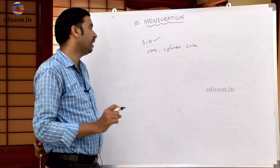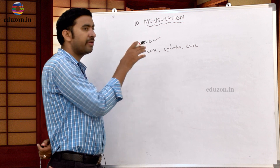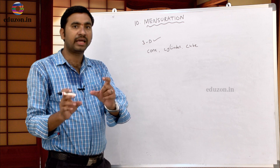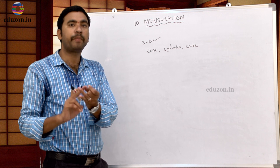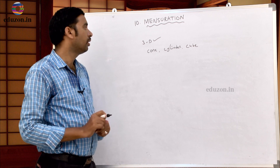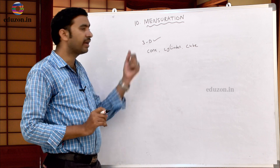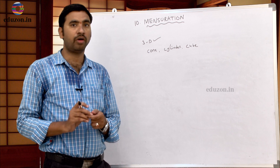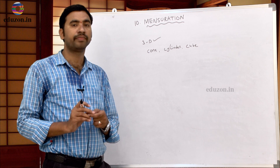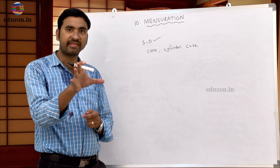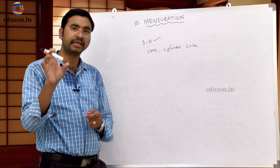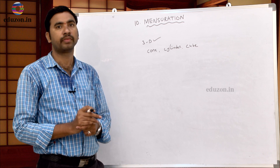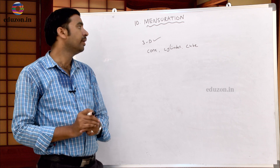Here in three dimensional figures, we will take length, breadth, and height. In these 3D figures, we will find out LSA, TSA, and volume also.